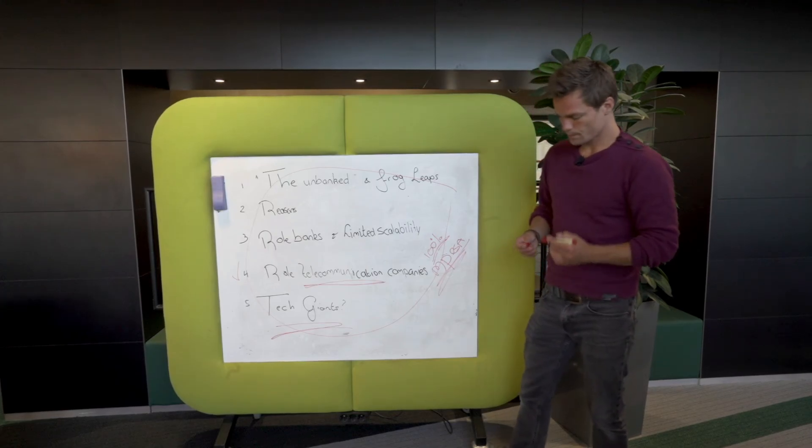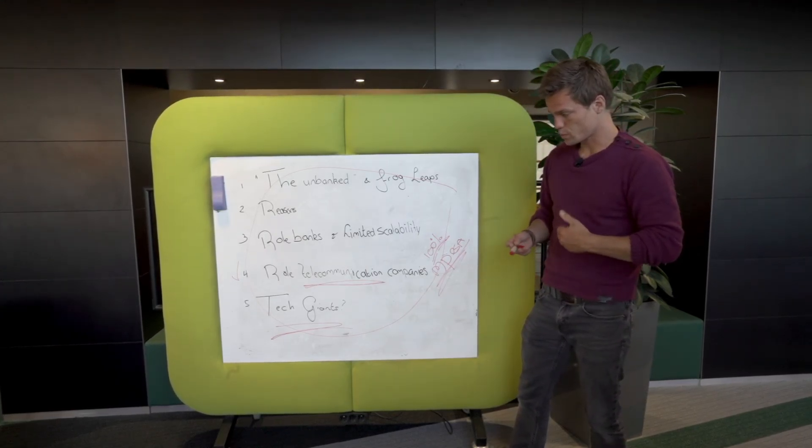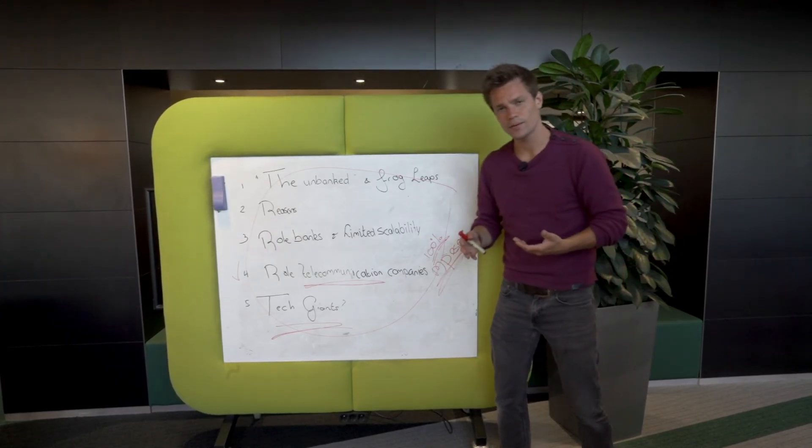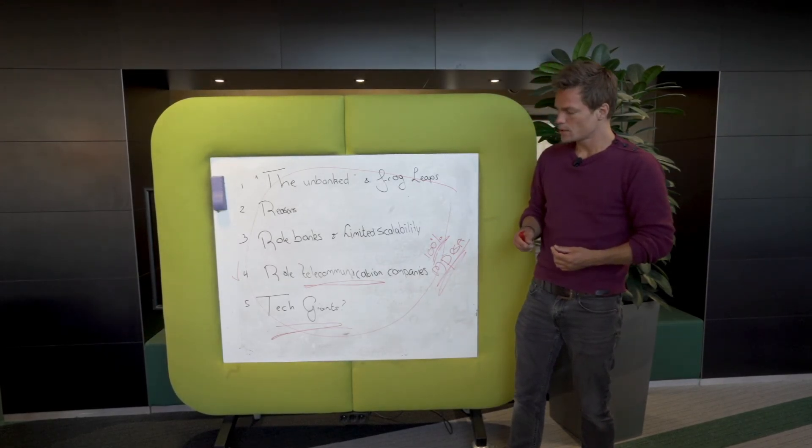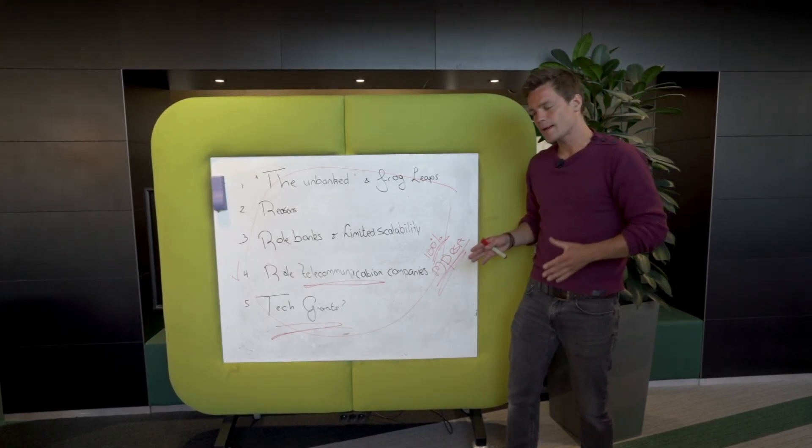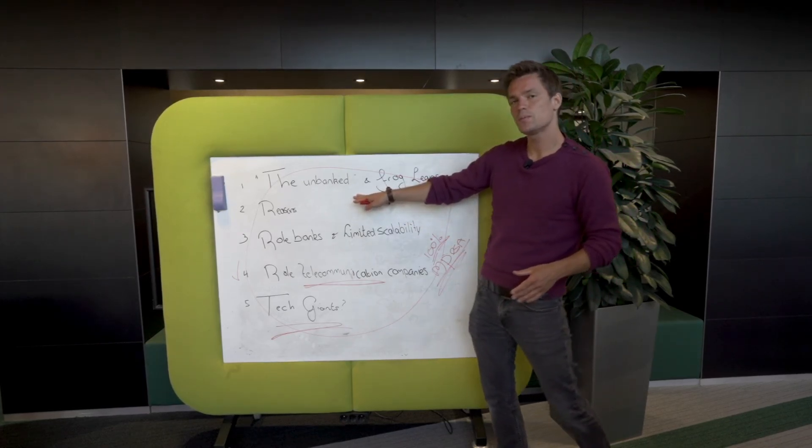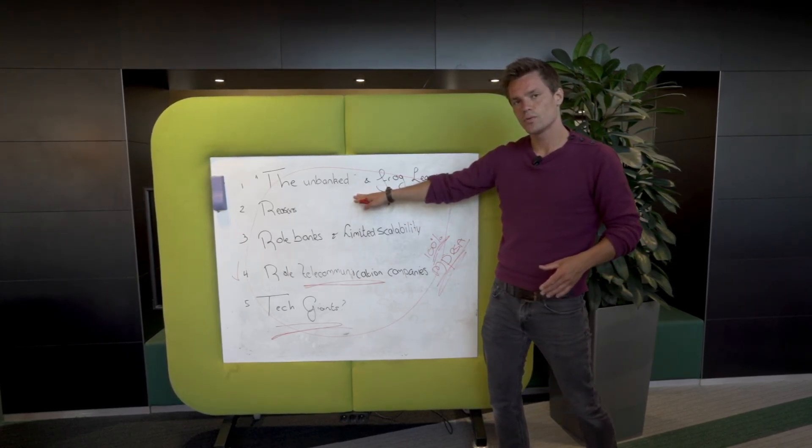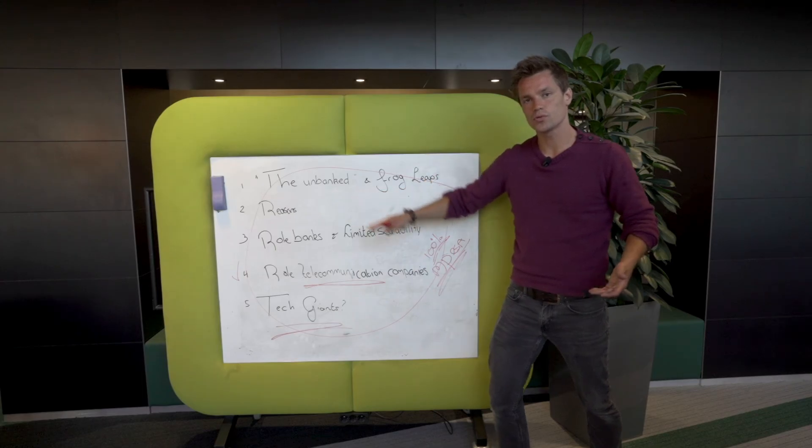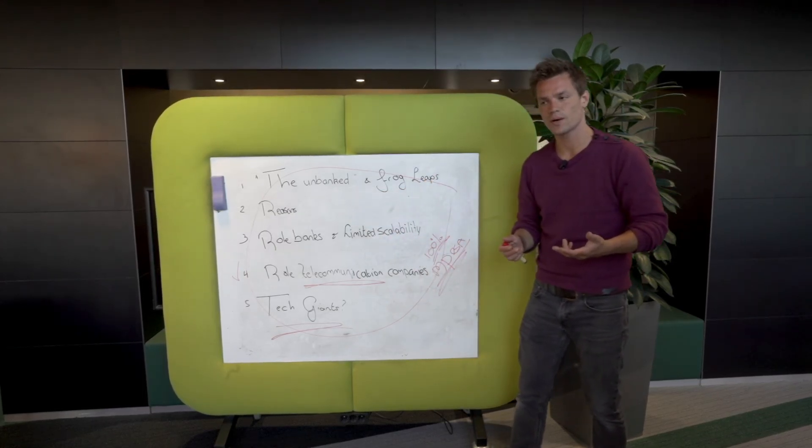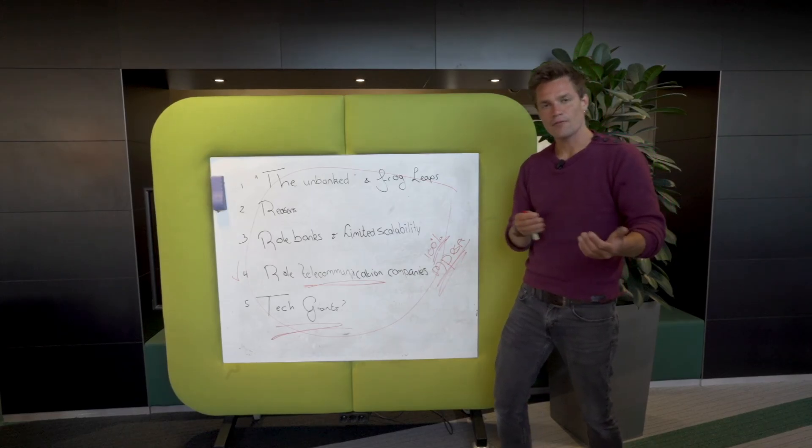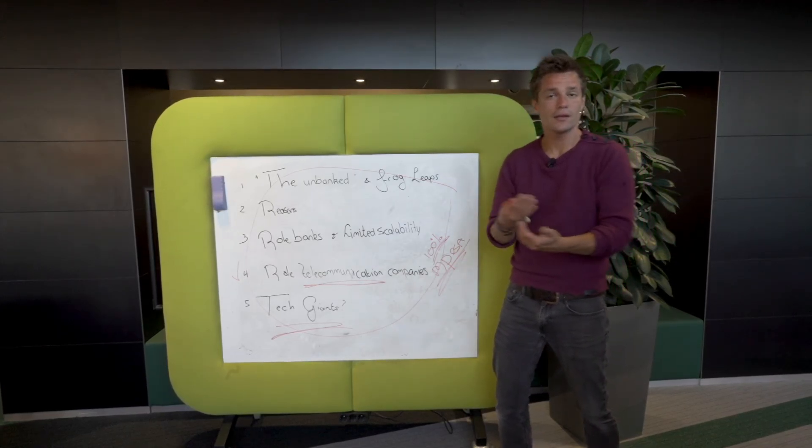And as you might have guessed already, this is one of the main reasons why people are very passionate about decentralized technology. Because if you apply this well, if you can enable these people to have access to certain types of financial tools - a good payment system, settlement system, but also a good credit system where you can have peer-to-peer lending for example.